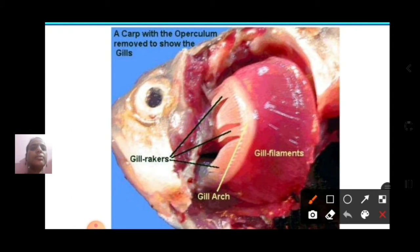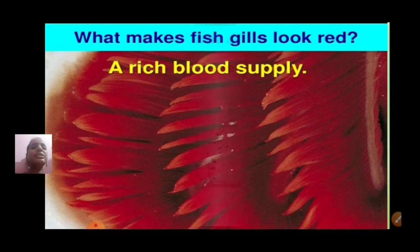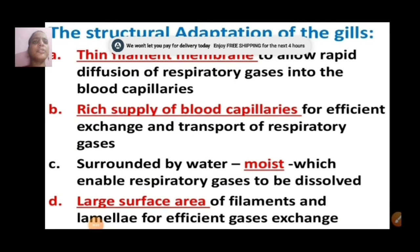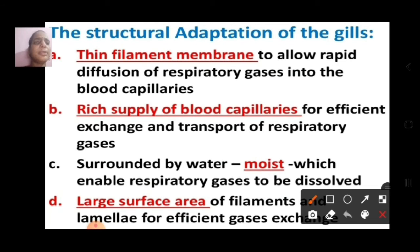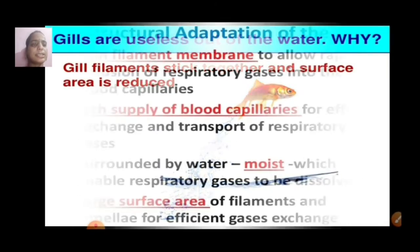Here you can see the operculum — the operculum of the scalp is removed to show the gill filaments and the gill arch. Gill filaments are very thin and extremely thin, and they look red because of the rich supply of blood. Gills will be useless if taken out of water because the gills will stick together. The gills have thin filament membranes so that diffusion can take place rapidly, rich supply of blood capillaries for efficient exchange and transport of respiratory gases, and are surrounded by water which keeps them moist. Large surface area of filaments and lamella for exchange of gases is present.